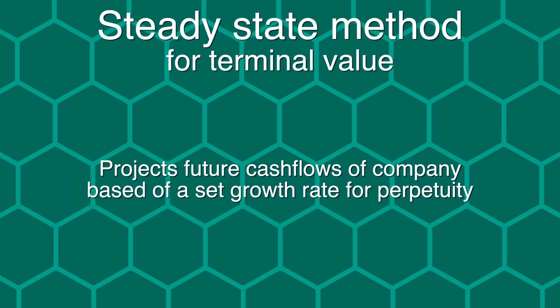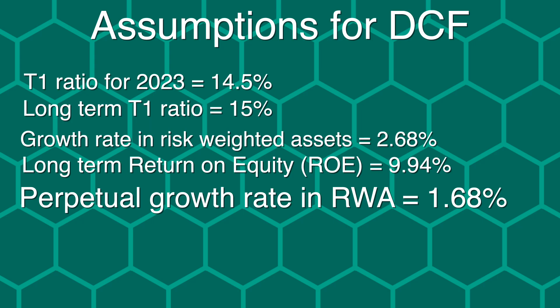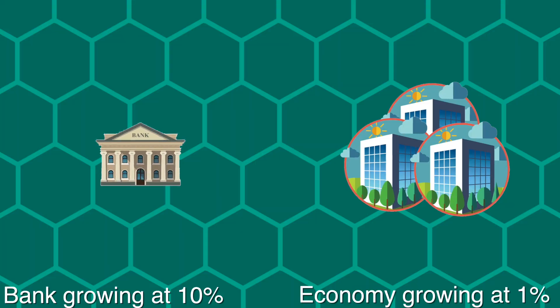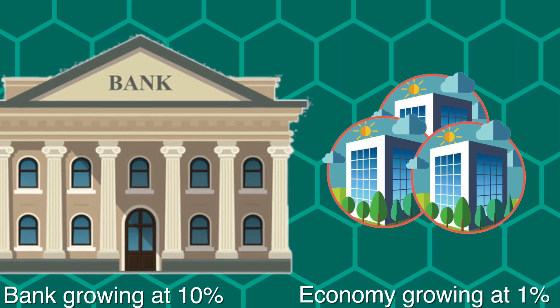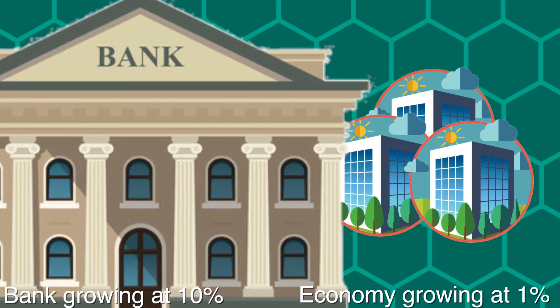At the end of the 10th year, I will use a steady state method to estimate the value of the business as if it continues to operate perpetually. In this perpetual state, I have assumed that Citigroup will continue to grow at 1% below the expected rate of the economy forever. This value has to be set below the expected rate of growth of the economy, as no company can grow faster than the economy forever, or else it will end up being larger than the economy itself.